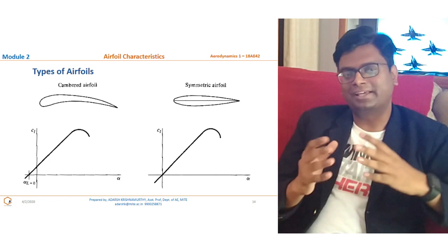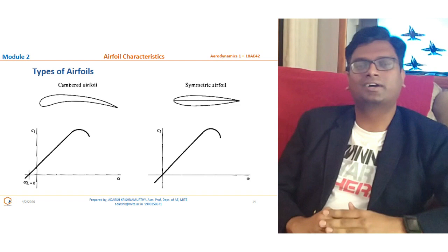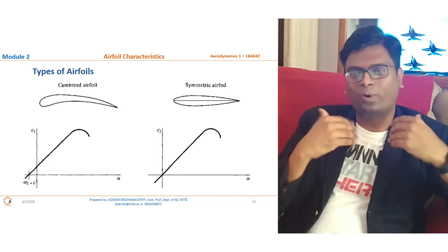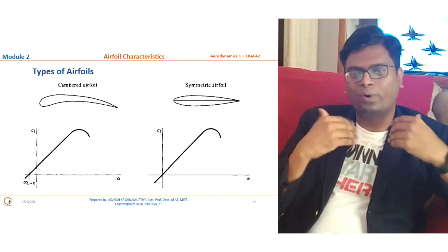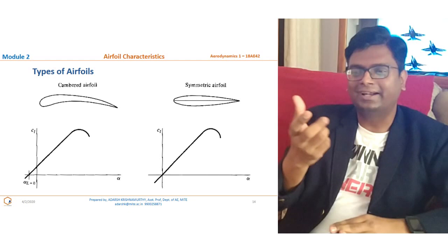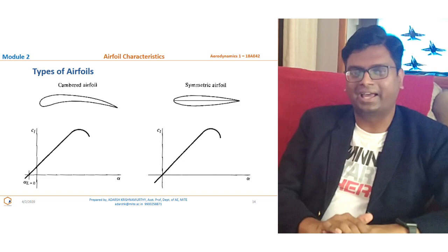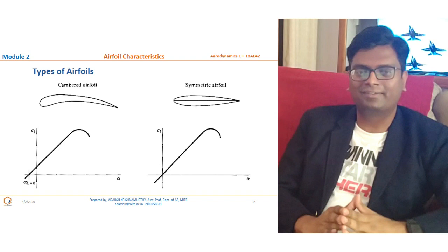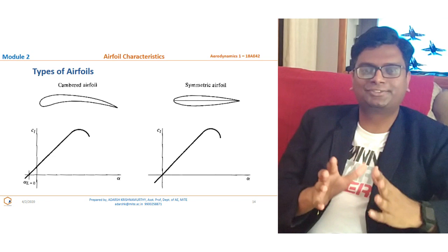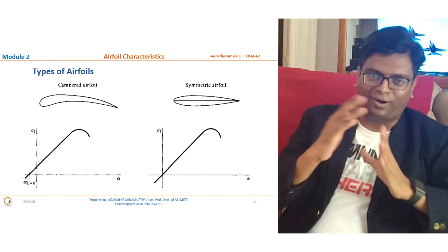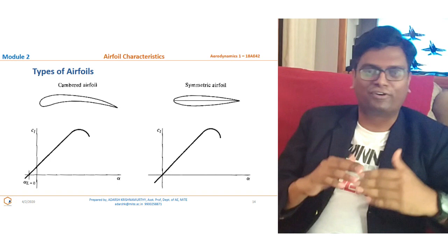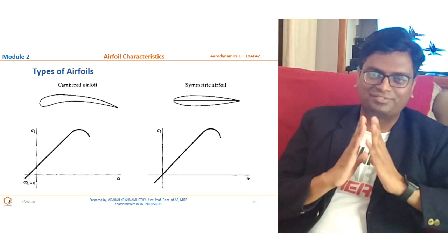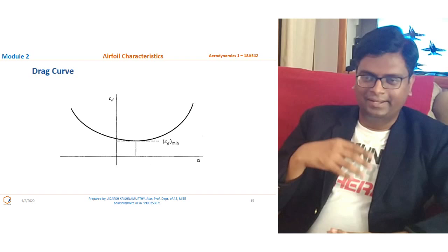For a symmetric airfoil — where the upper surface is identical to the lower surface — the lift curve starts from the origin: at zero angle of attack, the coefficient of lift is zero. This is a very important distinction. For a cambered airfoil, CL becomes zero at a slightly negative angle of attack, typically around minus 2 to minus 4 degrees. For a symmetric airfoil, at zero angle of attack the coefficient of lift is zero.